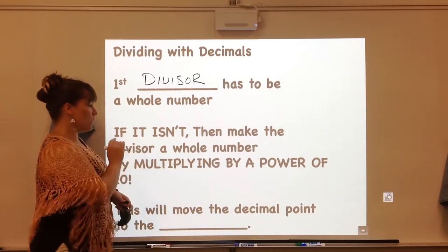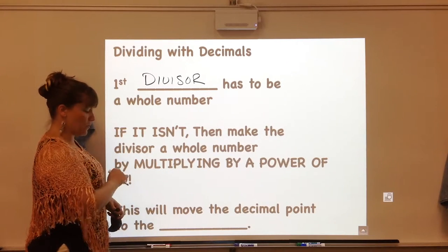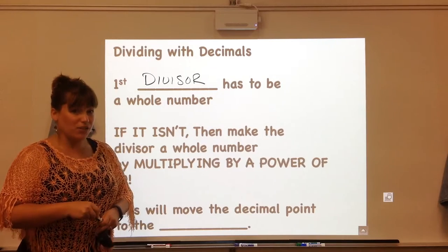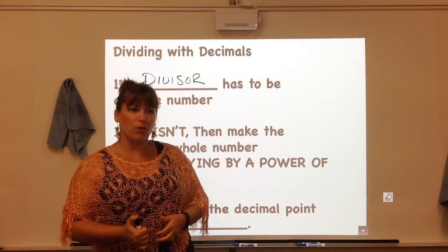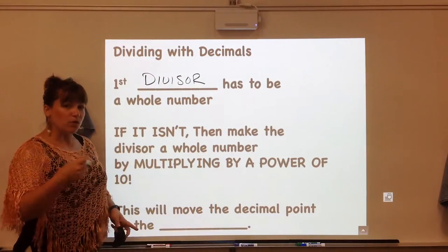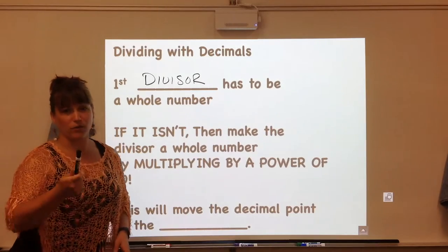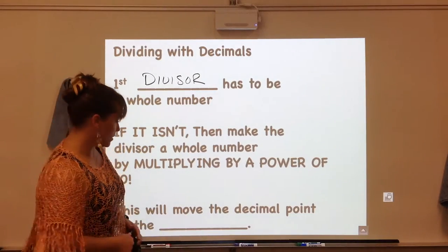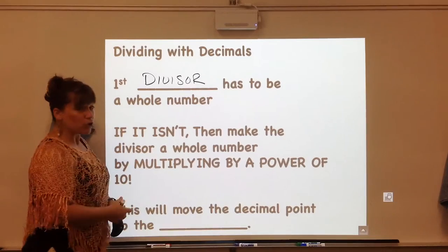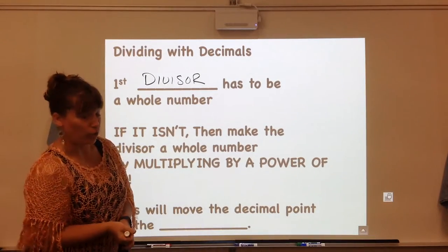If it's not, we're gonna make the divisor a whole number by multiplying it by a power of 10. So my tangent in the video before was actually very helpful now. When you multiply by a power of 10 - power of 10 meaning 100 or 1000 or 10,000 - this will then move the decimal point to the right. That's the good news because then it'll be a whole number.